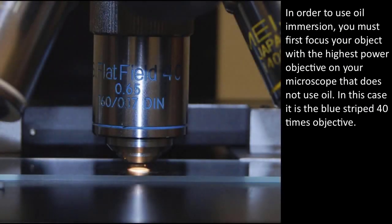In order to use oil immersion, you must first focus on your object with the highest power objective on your microscope that does not use oil. In this case, it is the blue striped 40 times objective.